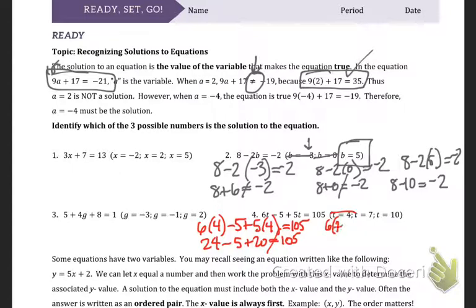6 times 7 minus 5 plus 5 times 7 equals 105. Let's see. So 6 times 7 is 42. Minus 5 plus 5 times 7 is 35. Again, not going to equal 105. 7 doesn't work.